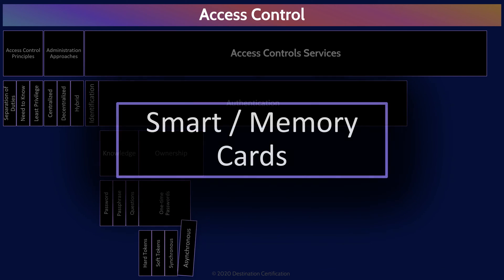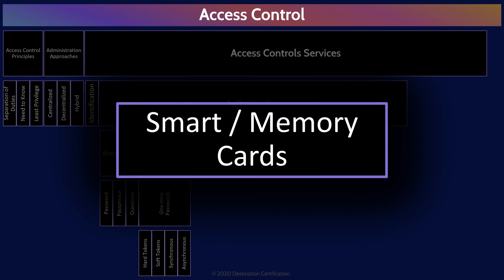Going back to the other form of authentication by ownership, we have smart cards and memory cards. Smart cards are well-named because they have a computer chip within them that provides some smarts. Memory cards, on the other hand, just store some data that can be read — the same data every time. Less secure.